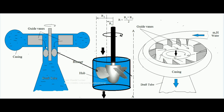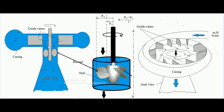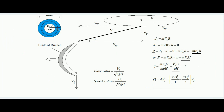For efficiency: when water enters and interacts with the runner it carries a head H. The input energy is m·g·H — to convert head into energy we multiply by mg. The output is m·Vw·u. Therefore hydraulic efficiency equals output divided by input: m·Vw·u divided by m·g·H. Cancelling m, the hydraulic efficiency of the Kaplan turbine is Vw·u divided by g·H.